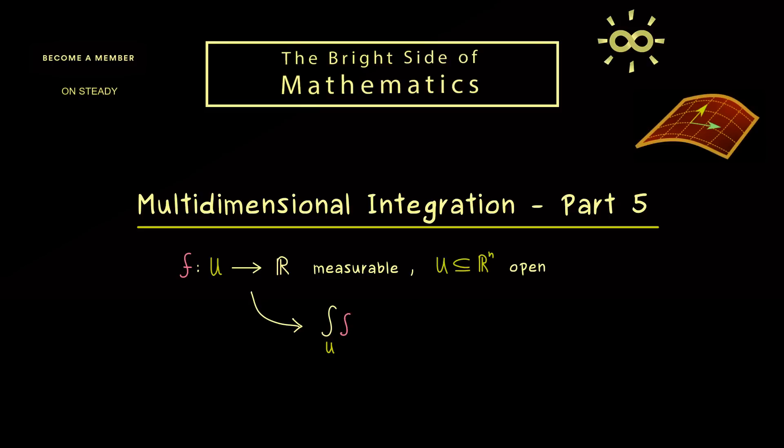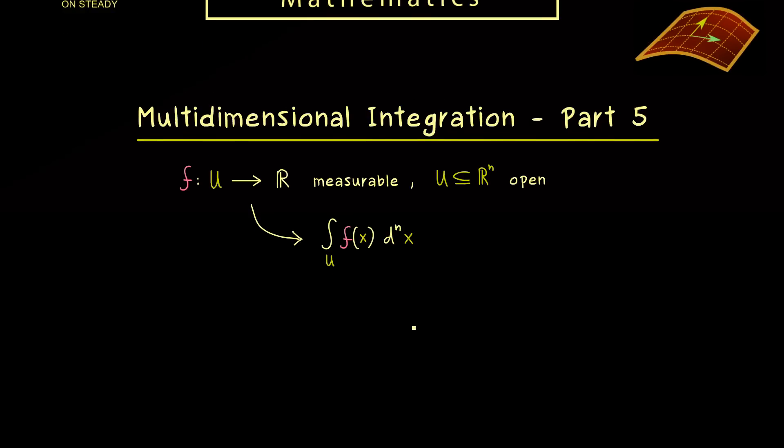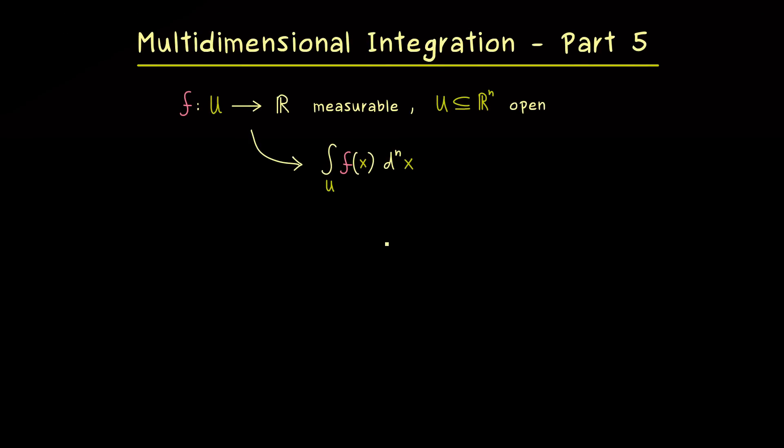Namely the n-dimensional integral of the function f. And you know one possible notation we chose for that would be integral of f and d^n x inside, which simply means that we have n variables which we put into one vector x. And now the change of variables formula will tell us that we can introduce a new variable but still get out the same integral value in the end.